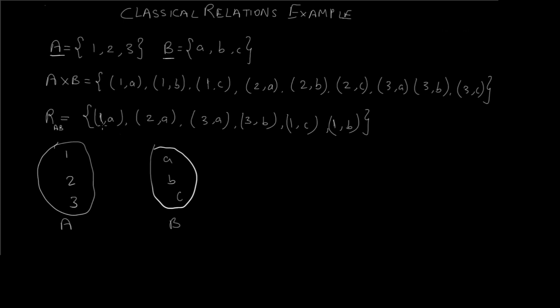So according to the relation we have the first pair as (1,a) so we have to draw a diagram and an arrow from this to this point. We again have (2,a), we have (3,a), now we have (3,b), we have (1,c) and we have (1,b). So this is the diagrammatic representation of the relation.